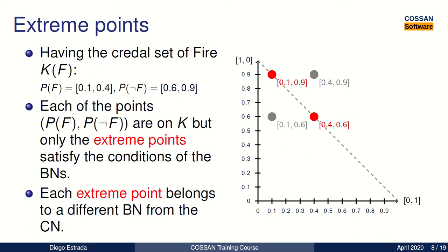Each extreme point belongs to a different Bayesian Network contained within the original Credal Network. So in this case, we have two local Bayesian Networks that correspond to the original Credal Network.